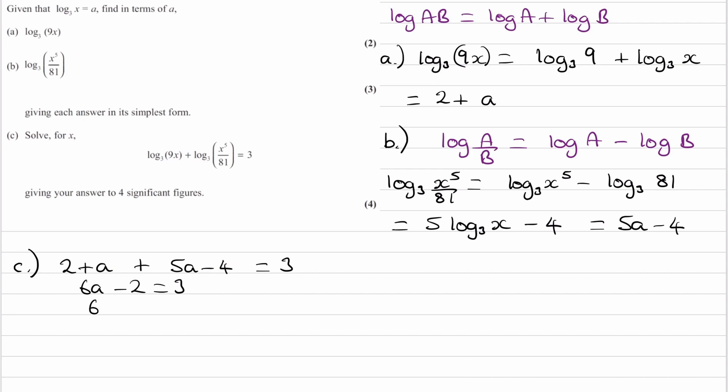And then we can rearrange. So 6A is equal to 5. And then A is equal to 5 over 6. Now, remember that A is equal to log to the base 3 of x. So then this becomes log to the base 3 of x is equal to 5 over 6. To get rid of the log to the base 3, we can then do 3 to the power of both sides. And we end up with x is equal to 3 to the power of 5 over 6, which will then be 2.498. And that's the final answer.